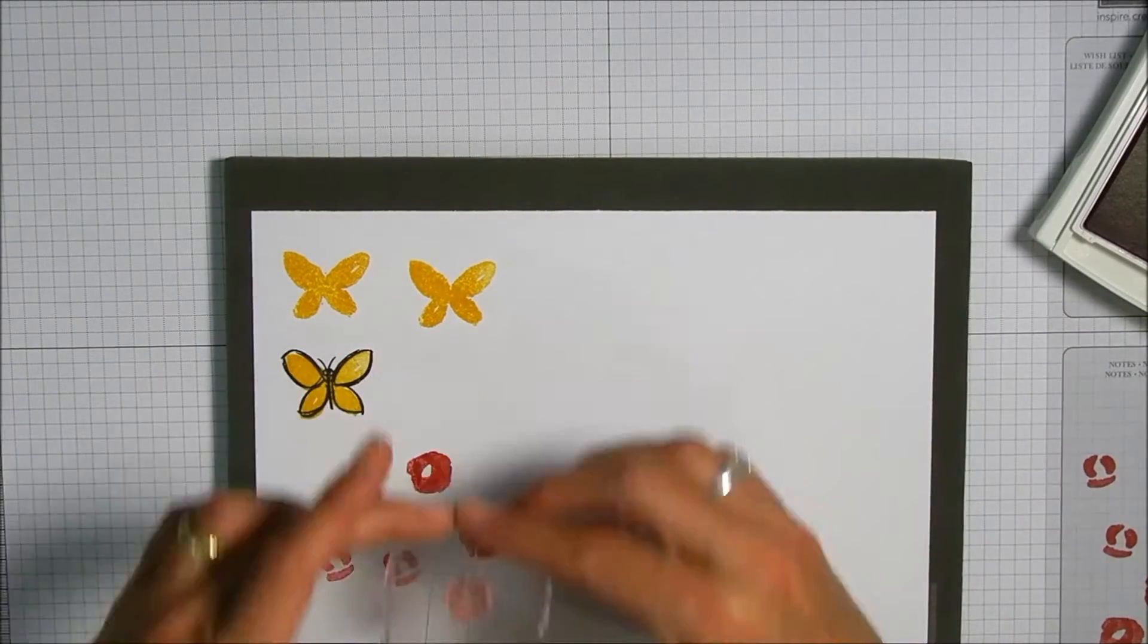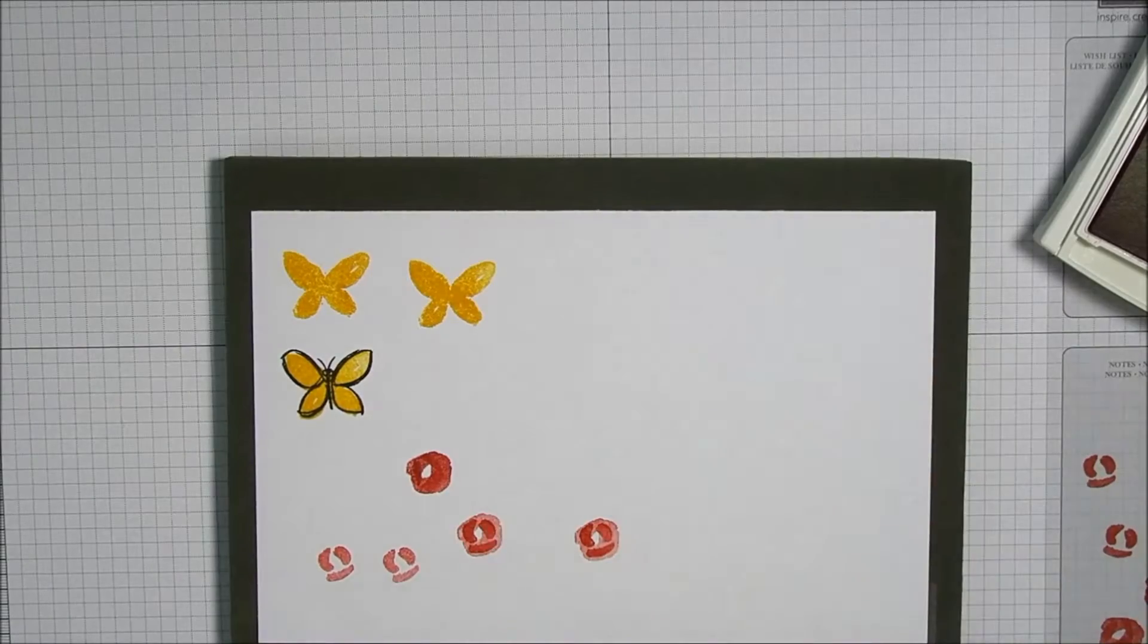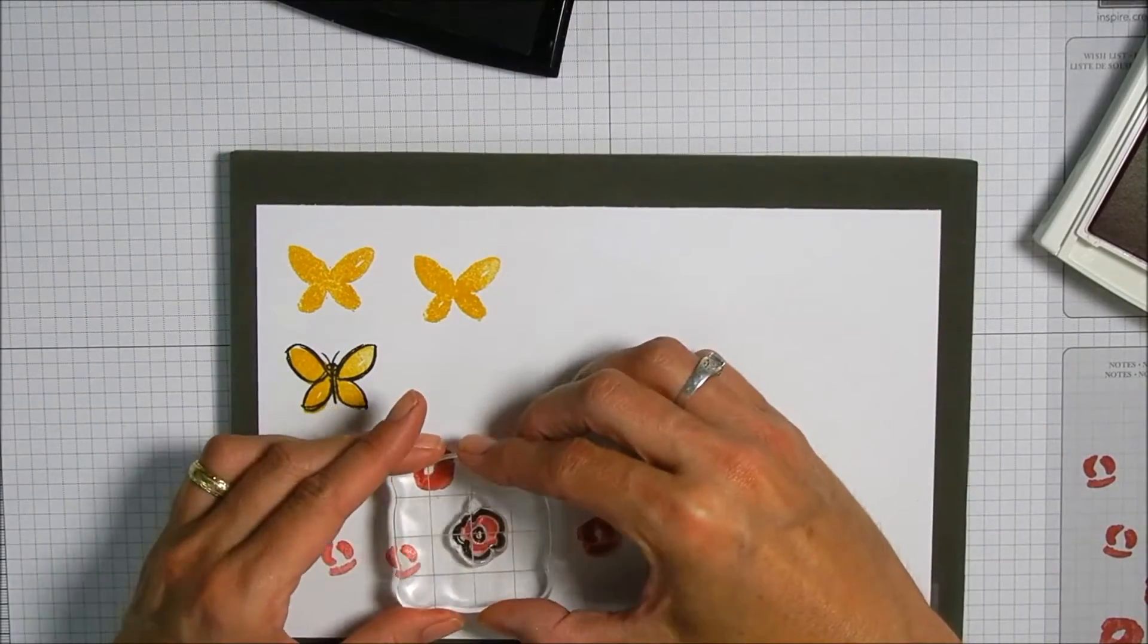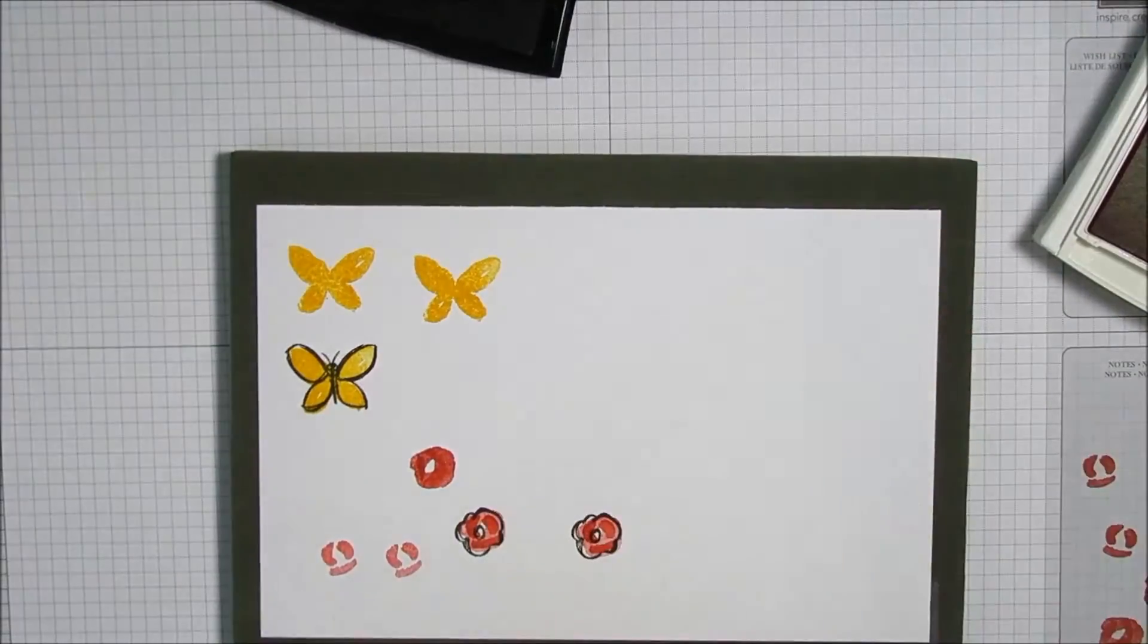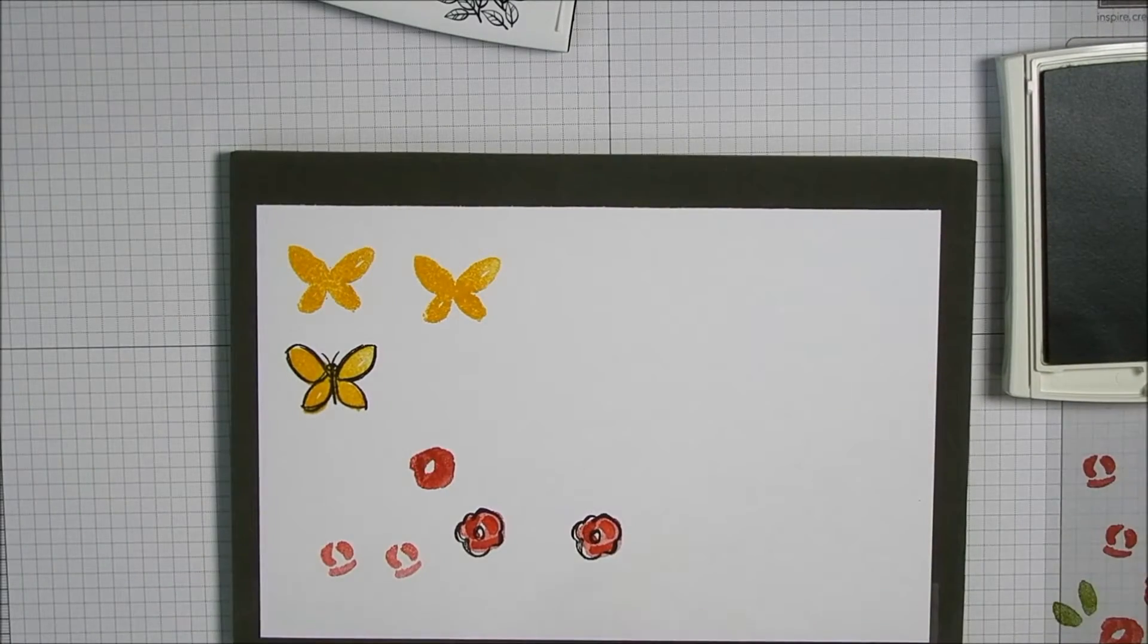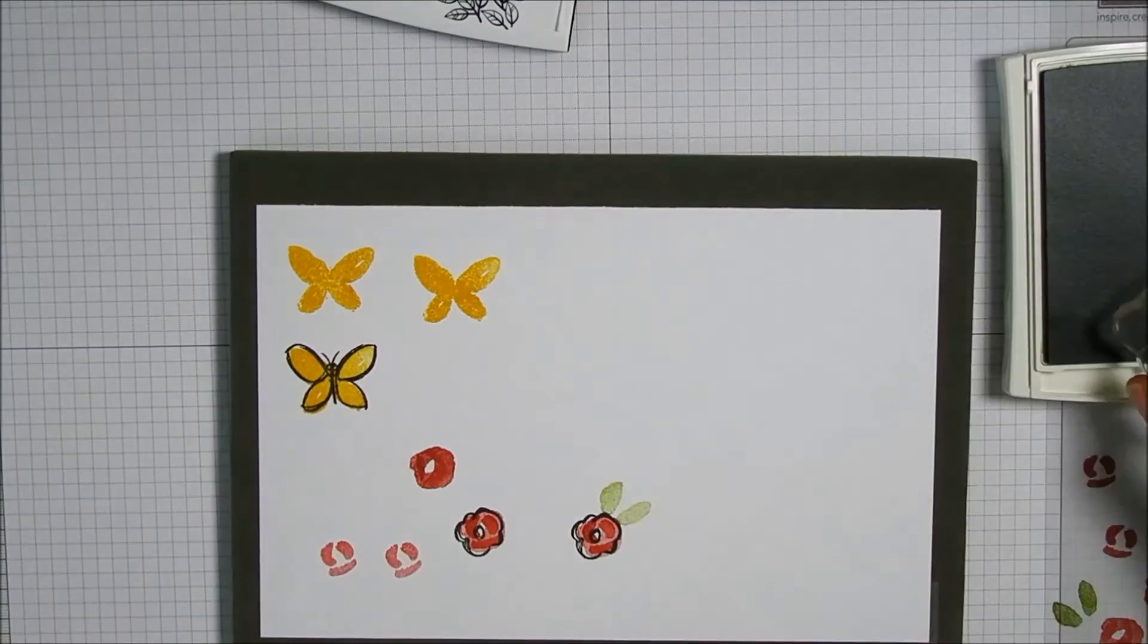Now I'm going to be using one of those little teeny floral stamps. I'm using Real Red and I'm stamping off for the first part and then using it full strength for the second, and Onyx Black again for the outline.